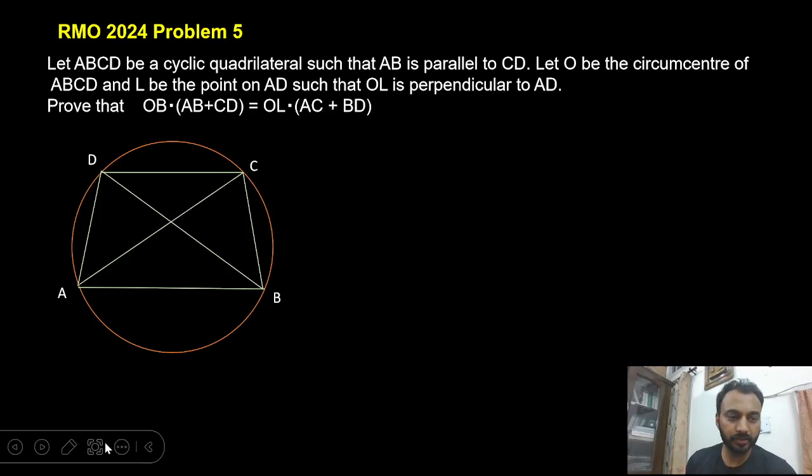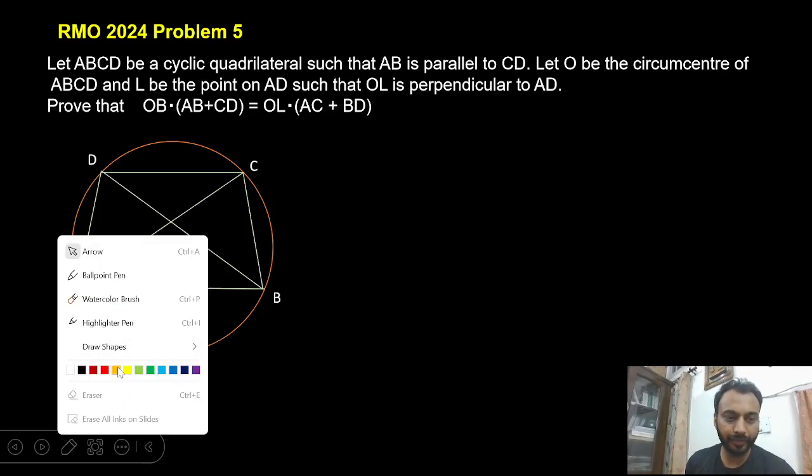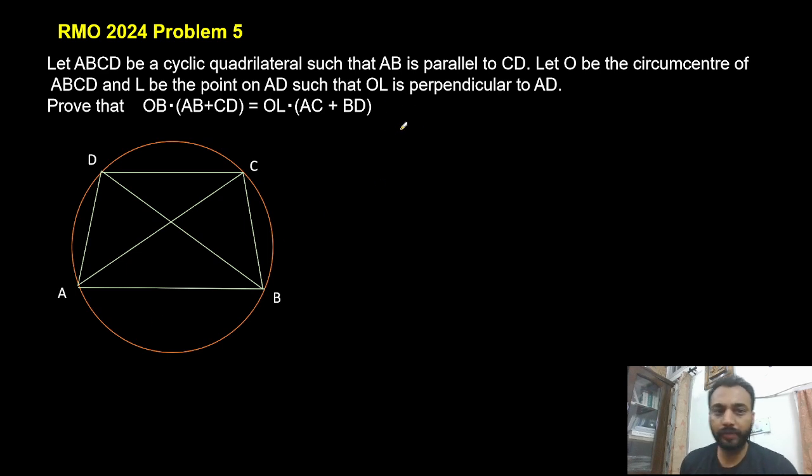Hello dear students, so let's see the solution of question number 5 without trigonometry. In this we have ABCD is a cyclic quadrilateral in which AB is parallel to CD and O is its circumcenter of ABCD and L is a point on AD.